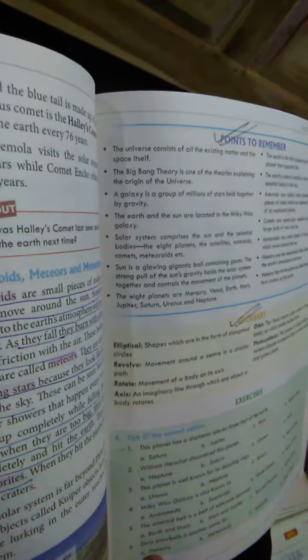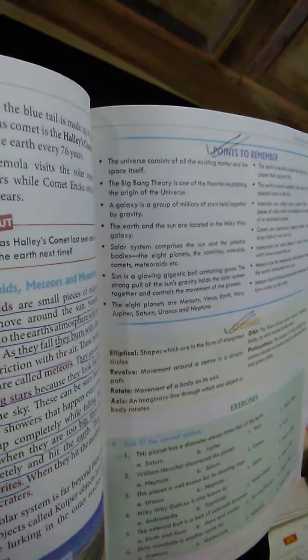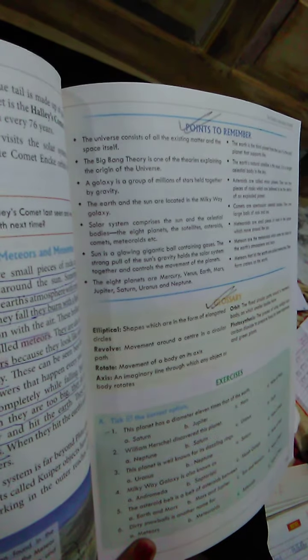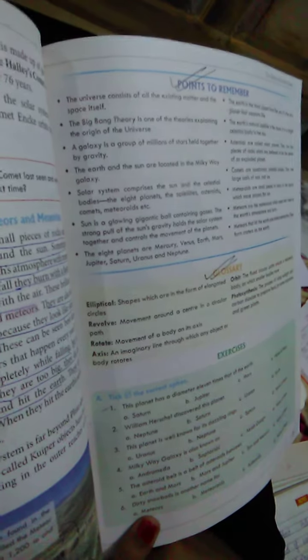Comets are a spectacular celestial body. They are large balls of rock and ice. Comets are small pieces of rock in the space which move around the Sun.